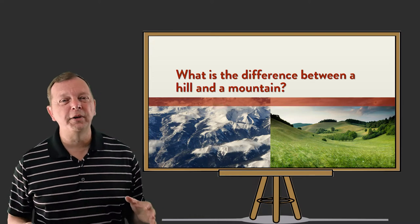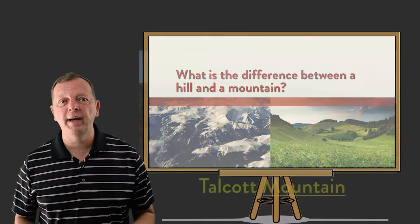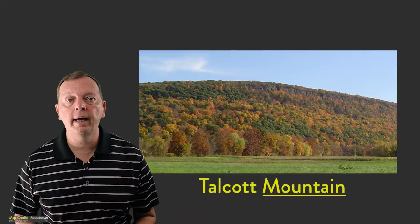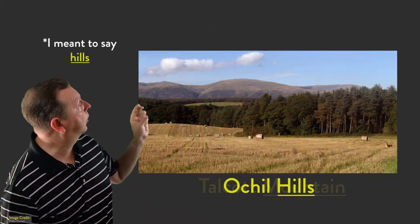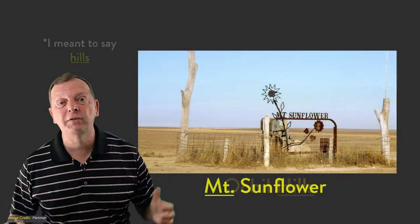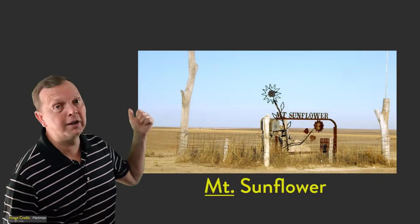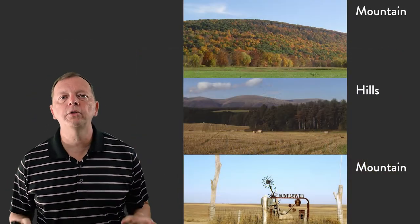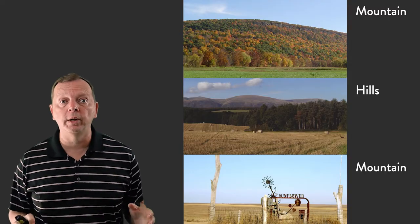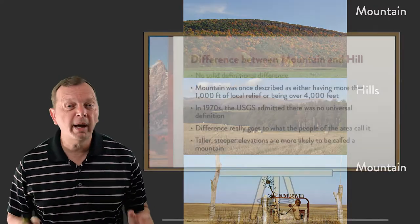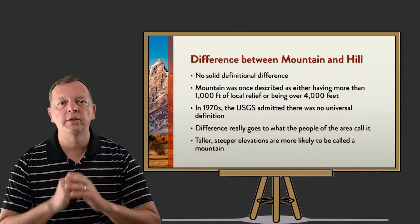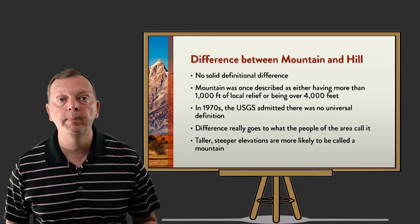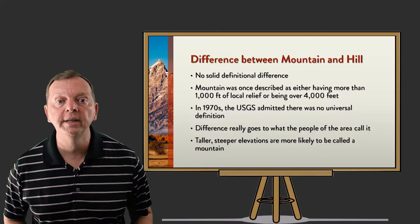This is where the definitions of mountain and hill get vague. For example, this is the Talcott Mountain in Connecticut, but these are the Ochoa Mountains in Scotland. And just for kicks, this is Mount Sunflower in Kansas. Generally, hills and mountains are really dependent upon what people want to call them. Mountains do tend to have a steeper rise in their landscape — the steeper the rise, the more likely people will call it a mountain.